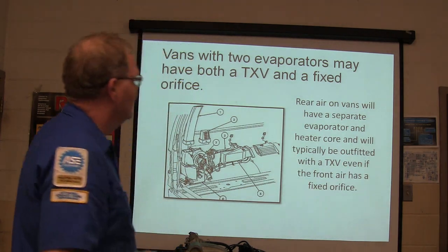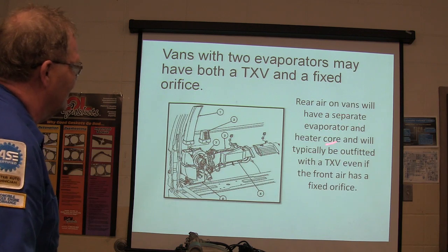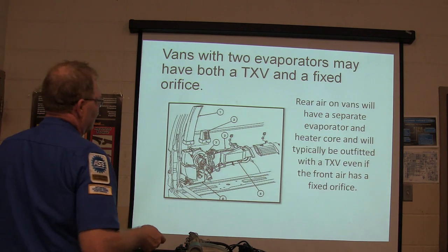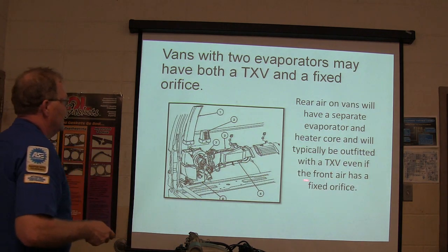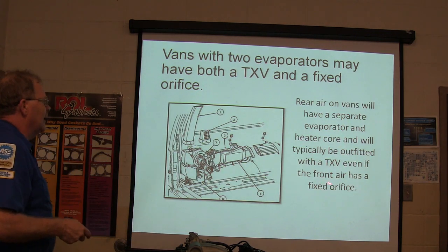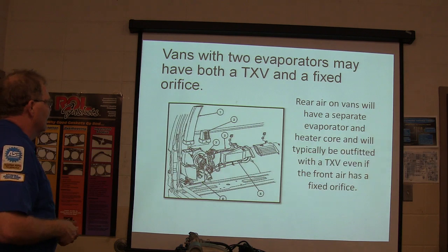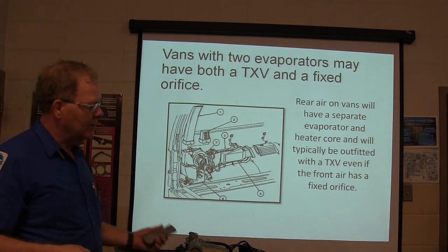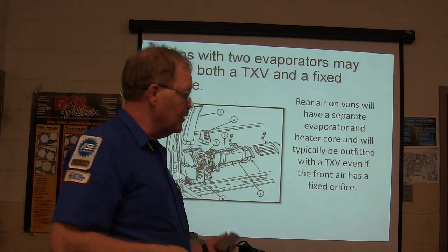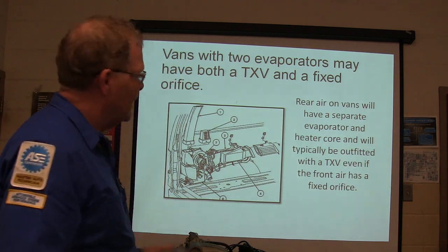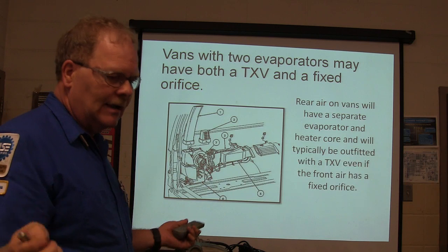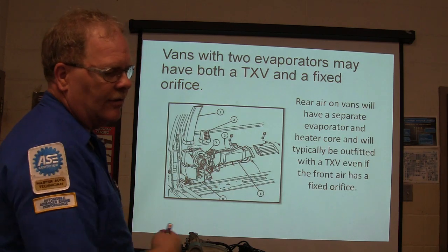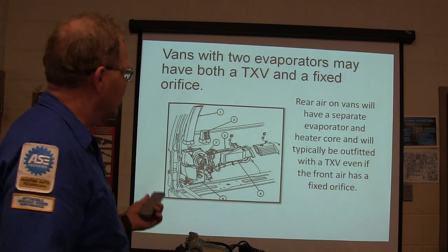The rear AC on a van will have a separate evaporator. The heater core will easily be outfitted with a TXV even if the front air uses an orifice tube. We've had to change TXVs on the rear unit sometimes. If you have too much oil in the system it won't cool, because it will coat everything with oil — you've got to flush it out.